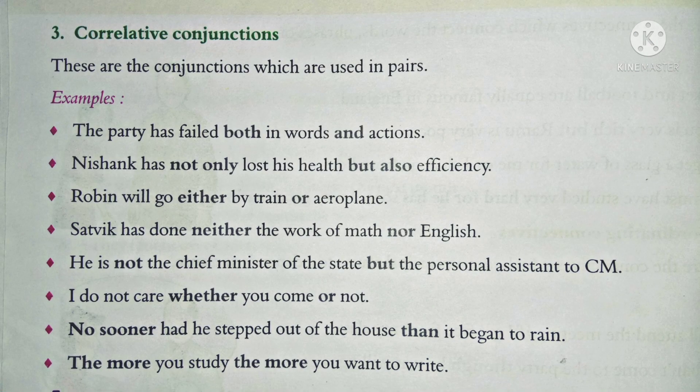The third kind: correlative conjunctions. These are the conjunctions which are used in pairs — yeh aise sanyanjan hain jinko jodne mein istemal kiya jata hai. See the examples. The party has failed both in words and action — here, 'both' and 'and' are correlative conjunctions.